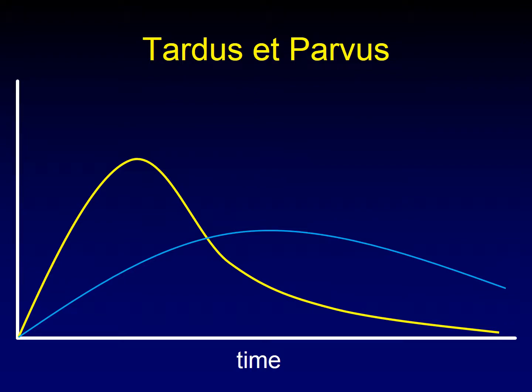Our third parameter is cerebral blood volume — and this one's not so clear. We certainly have more volume in the systolic phase on the normal curve, but the tardus-parvus curve has time during diastole to make up for it. So it's not clear how this balances out or whether there will really be a reduction in blood volume. That's why blood volume is our most specific parameter — it takes the most severe obstruction to produce a difference in blood volume.